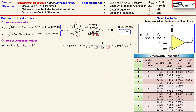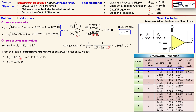We bring up the Butterworth response table, which shows filter order, number of sections, section type, and parameter scale factors. For n = 2, the table gives C1/C = 1.414 (which is √2) and C2/C = 0.7071 (which is 1/√2). Applying the scaling factor, C1 = 1.414 × 1.59×10⁻⁷ ≈ 225 nF and C2 ≈ 112.5 nF.